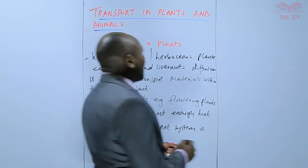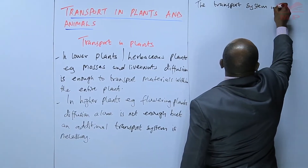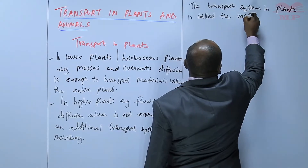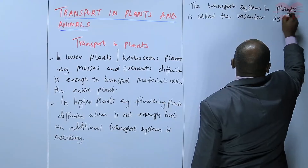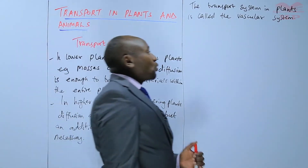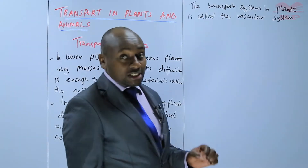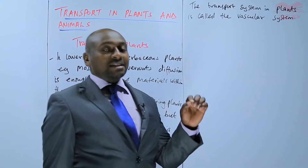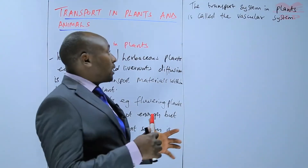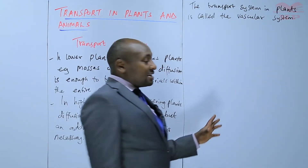The transport system in plants is called the vascular tissue, or the vascular system. For us to understand this system better, it is important to look at the various areas in the plant where the vascular tissue is found. We shall look at the root, the stem, and the leaves, to see this particular vascular system and learn how it carries out transportation of materials.